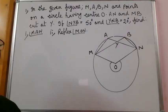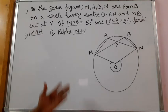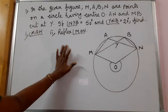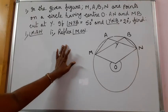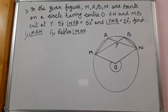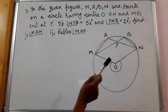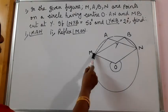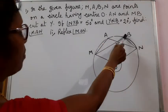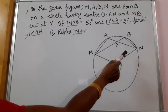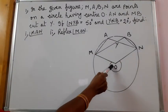Hello, welcome. Let us have a problem on chapter circles. The problem is, in the given figure, M, A, B, N are points on a circle having center O.